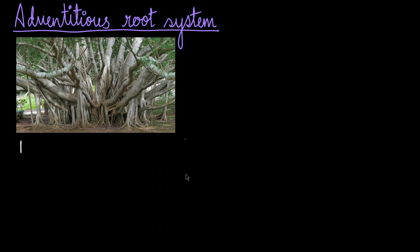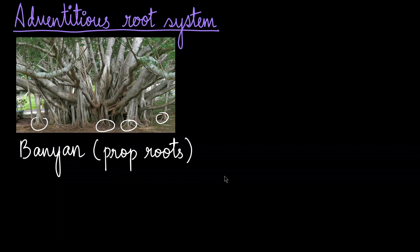Here we have a banyan tree. If you look at the picture, we can see that there are multiple root-like structures that are found around the main tree. These roots are called as prop roots, and the origin of these prop roots are actually from the branches that have come from the main tree.